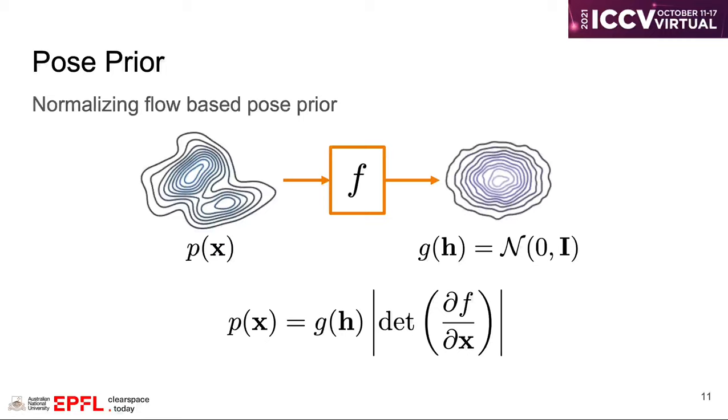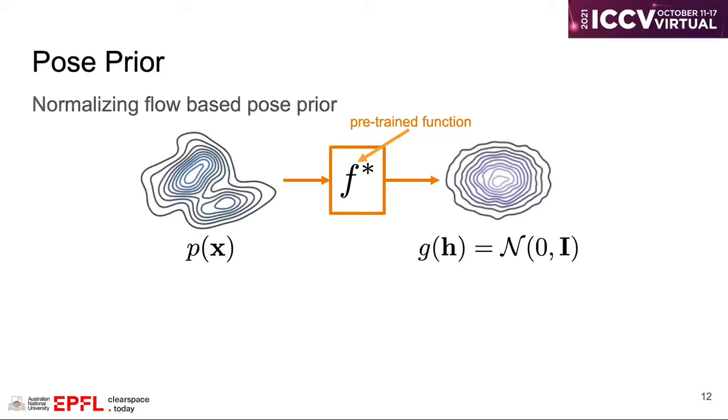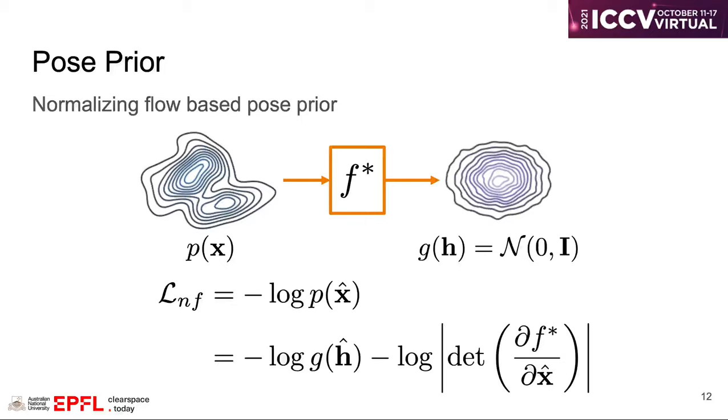In practice, the transformation function is modeled by a neural network, which is trained to better capture the data distribution. Given a pre-trained function f star and the human pose x hat produced by our generator, the normalizing flow-based pose prior is then defined as the negative log-likelihood of the pose.